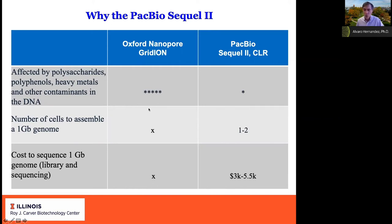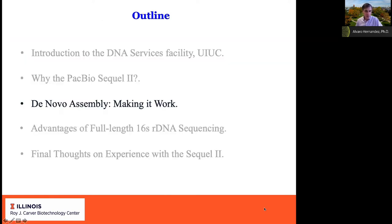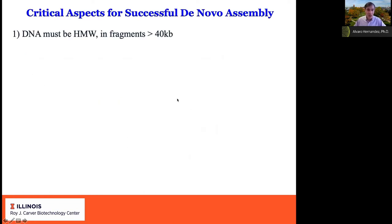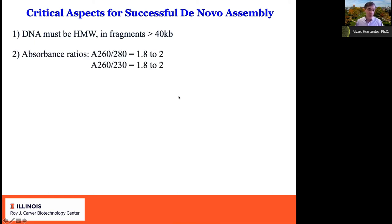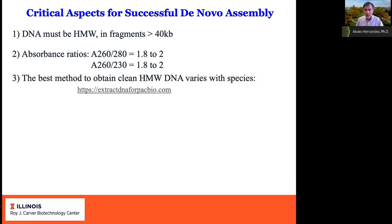Through quality control, we know in advance if the DNA meets the integrity and purity requirements for optimal sequencing performance. If it does not, we let our users know they may need one or two extra cells to reach the desired sequencing depth. The critical aspects for de novo assembly are: first, the DNA must be high molecular weight, in fragments over 40 kb; second, the absorbance ratios must be 1.8 to 2. If they are lower, contaminants are present that will affect sequencing efficiency.